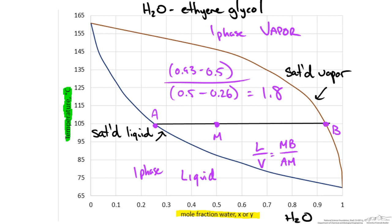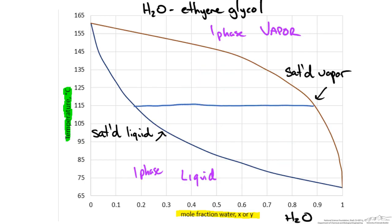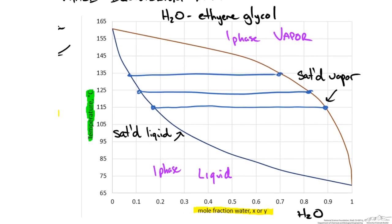However, when we start doing separation calculations like those in the McCabe-Thiele method, we want to use what is known as an xy diagram. If we draw our equilibrium tie lines and record both the x and y composition, and we do this for a number of temperatures, then now we'll generate a new plot that looks like the following.